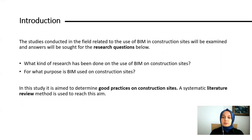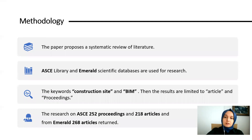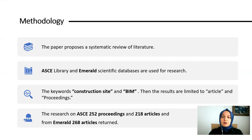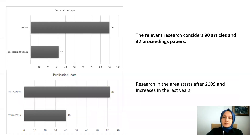A systematic literature review method is used to reach the study design. The paper proposes a systematic review of literature on the usage of information modeling and digital technologies on construction sites. This approach allows categorizing a large number of reports to identify the main trends in building information modeling. ASCE Library and Emerald Scientific databases are used for research, with the keywords 'construction site' and 'BIM' used for literature search. Results are limited to articles and conference proceedings, covering 90 articles and 32 conference papers.